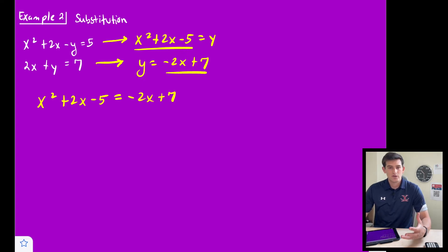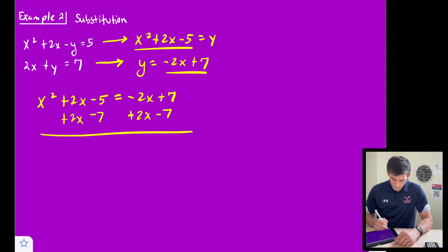And now we have a quadratic. We can combine like terms, set it equal to 0, and solve the quadratic. So let's add 2x and subtract 7. Subtract 7, add 2x. So now we have x² + 4x - 12 = 0.